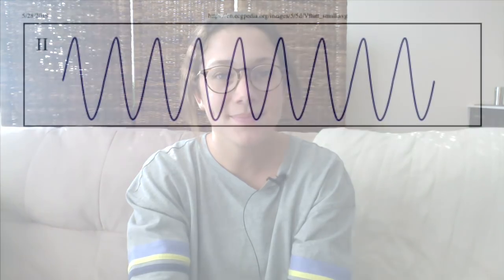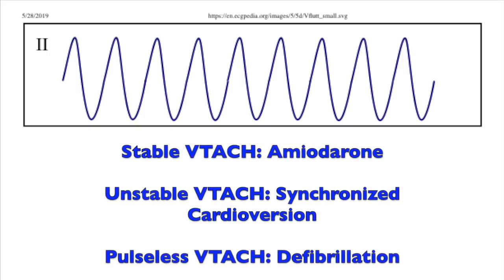Let's start with some recognition of rhythms. This is VTAC, and the treatment of VTAC is all dependent on if the patient has a pulse or not, and if they are stable or not. If this is pulseless VTAC, these patients need to be shocked — defibrillation. If the patient has a pulse and they are stable vital sign wise and symptom wise, they can simply be given an antiarrhythmic like amiodarone. But if they are symptomatic or unstable vital signs wise, then they need to go through synchronized cardioversion.